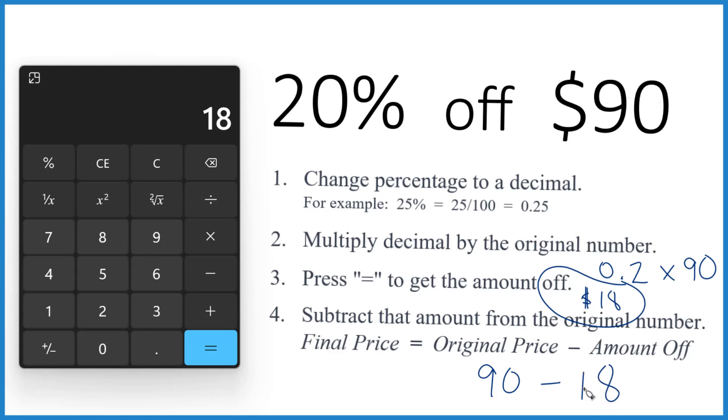And 90 minus 18 is 72. So your final price is $72. You got $18 off when you take 20% off $90.